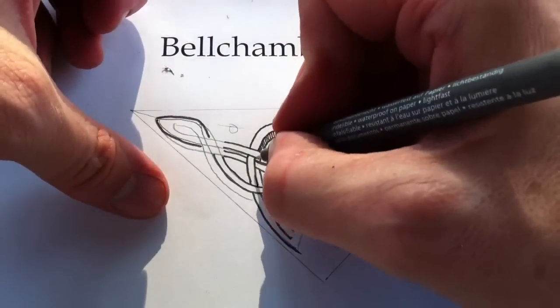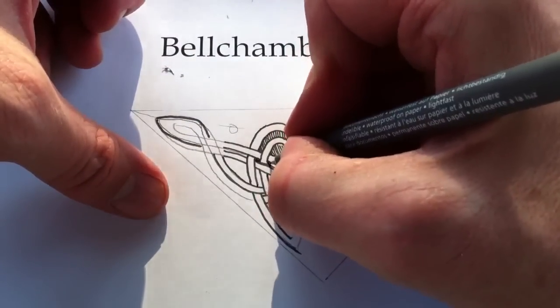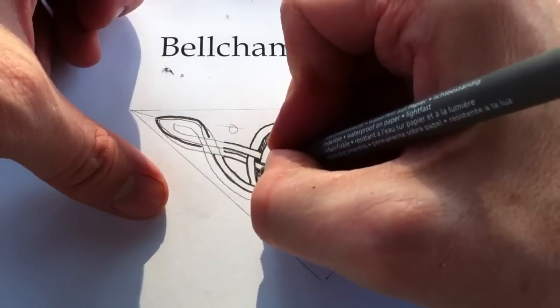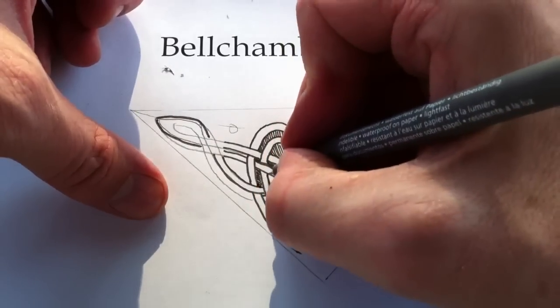And I'm just gonna color in some of the portions here. Just doing a single line before I crosshatch it.